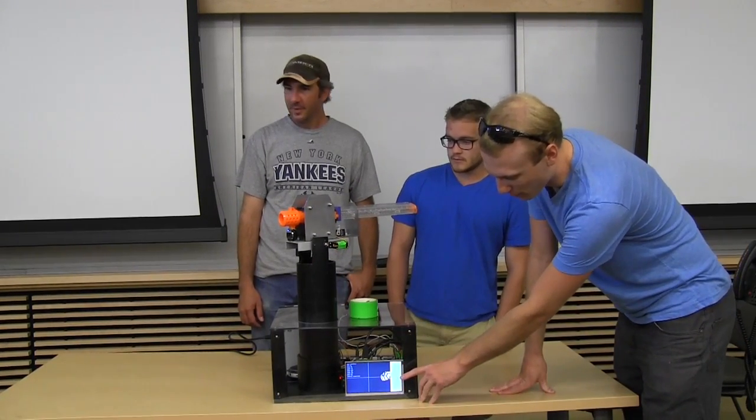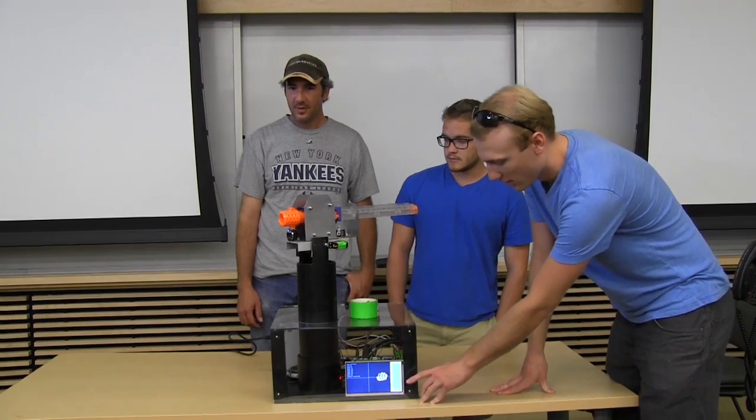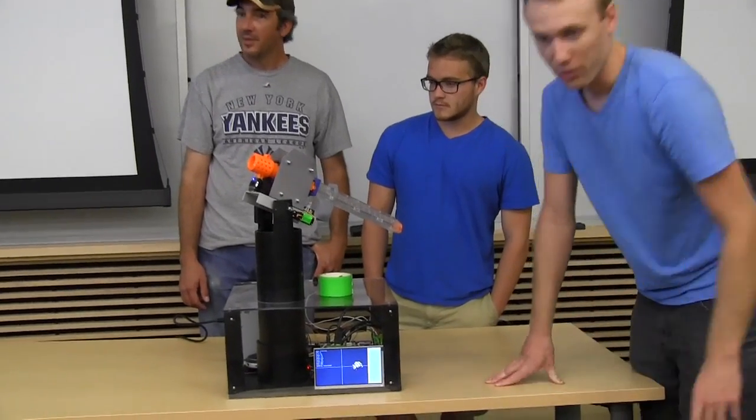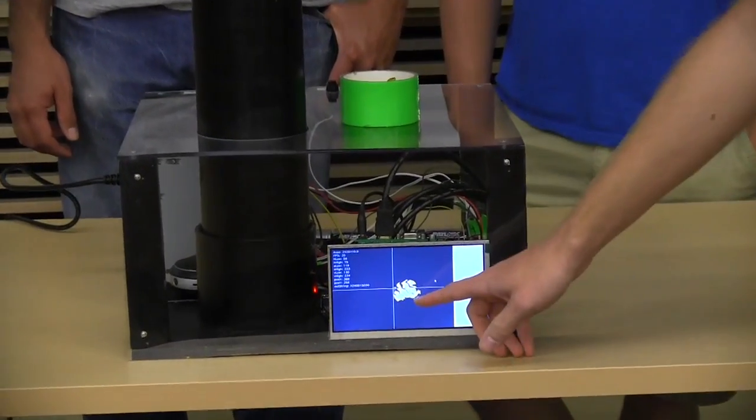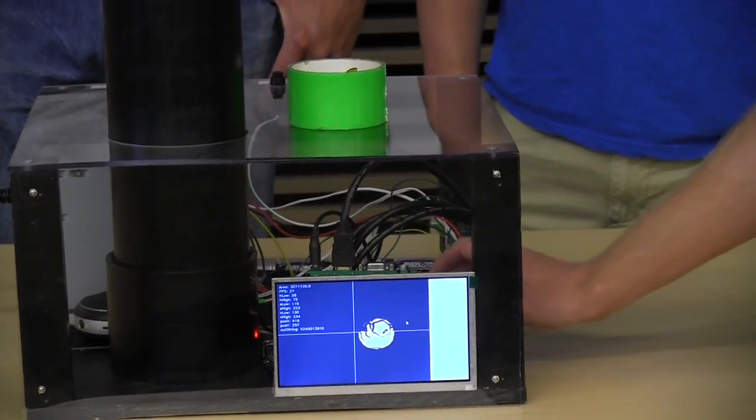We have an HDMI display here which shows what the camera sees. It thresholds a color image to look for things that are bright green and shows them as white on the surface, and everything else is black.